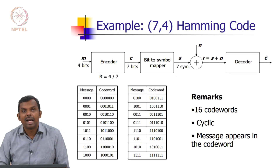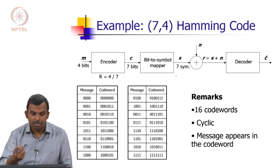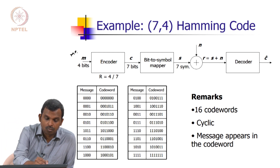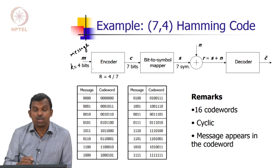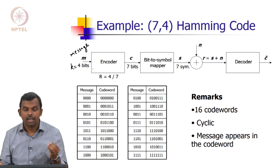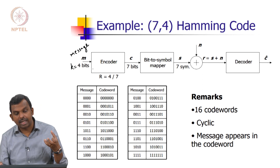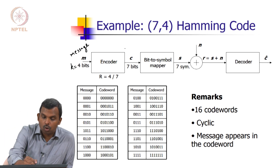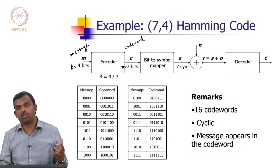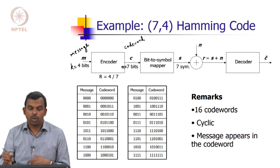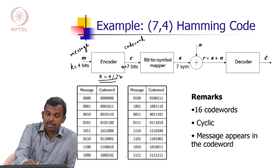This is the 7,4 Hamming code. Where do the 7 and 4 come from? This is your message vector and it has k equals 4 bits of message. Previously in the repetition code k was 1; in this case k is going to be 4. We take 4 bits at a time and do the encoding. Your codeword C has n equals 7 bits. So 4 bits of message gets converted into 7 bits of codeword, and your rate is 4/7 bits per symbol.